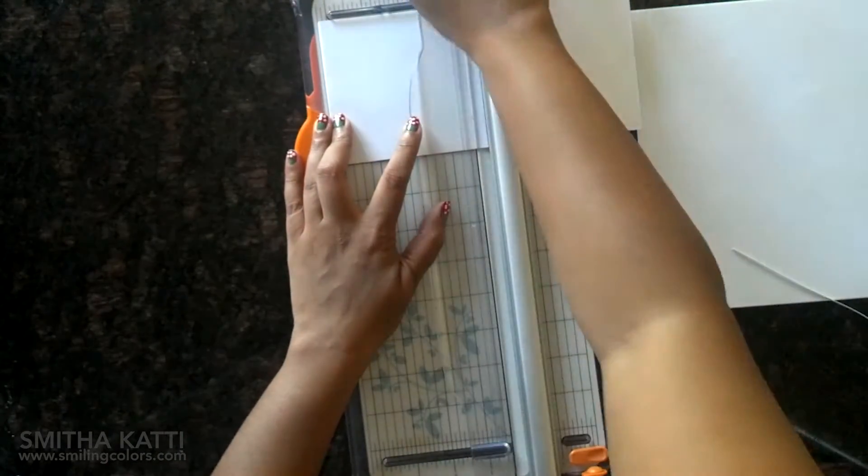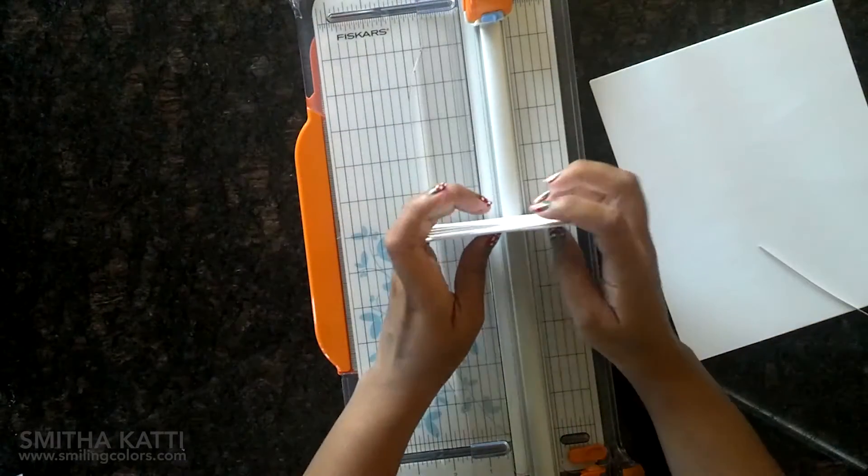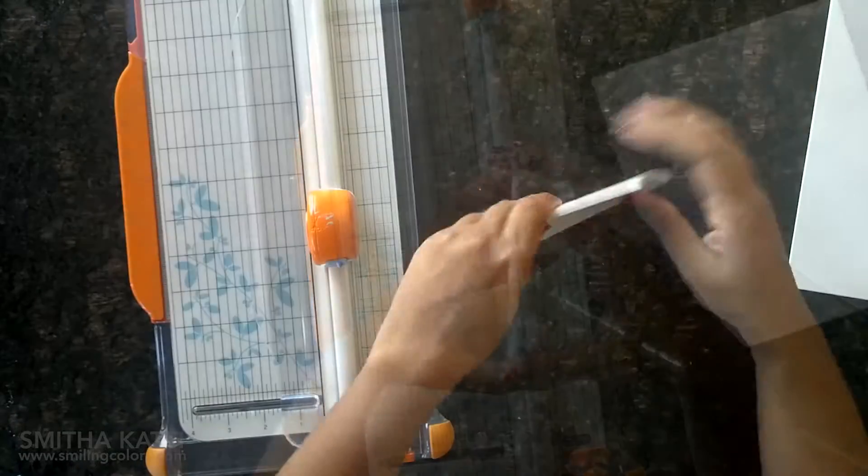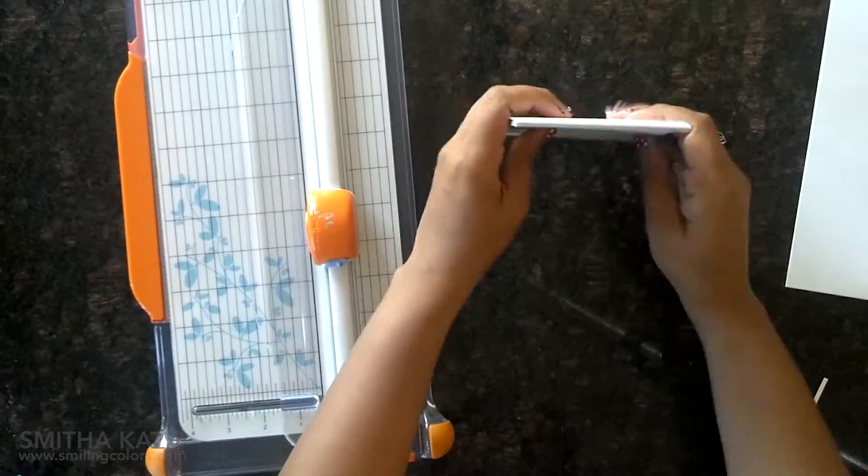I am trimming my paper into 4x4.25 inch rectangles today. This way you can make these notepads any size that you would like. Once I have a nice stack of paper ready, I keep them all together with a single binder clip for now.